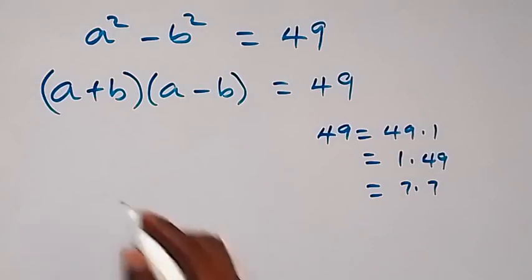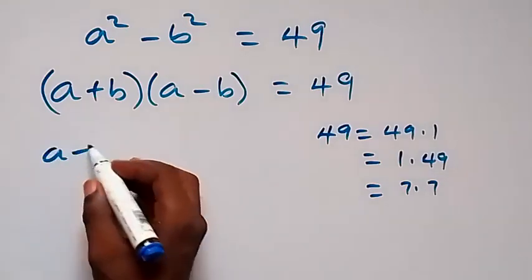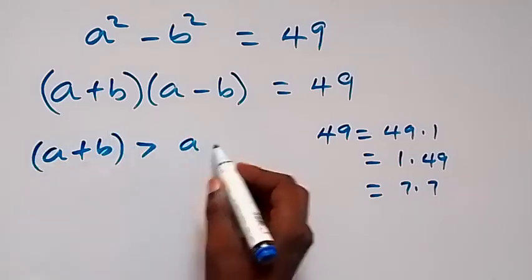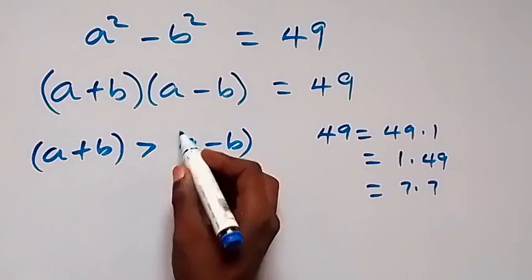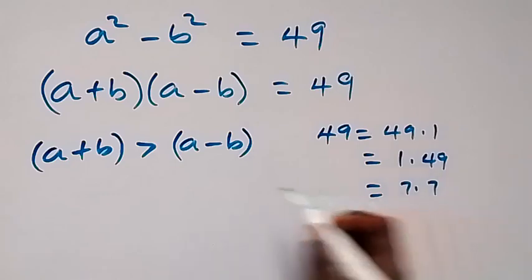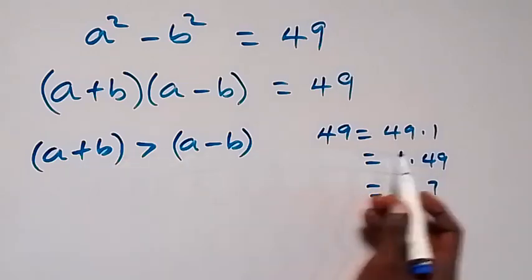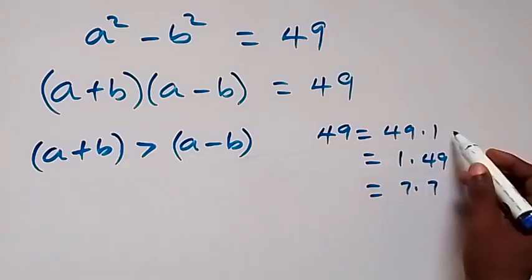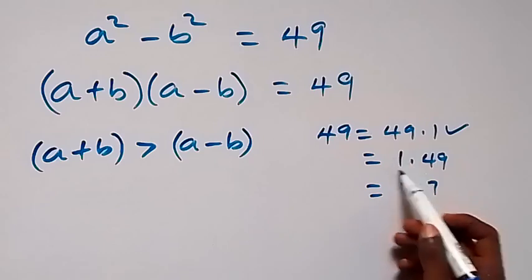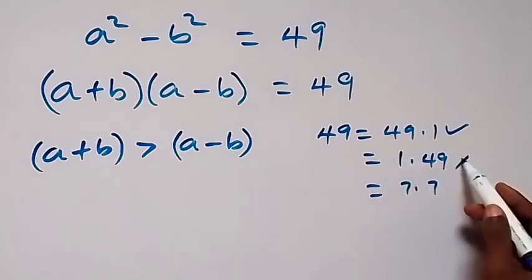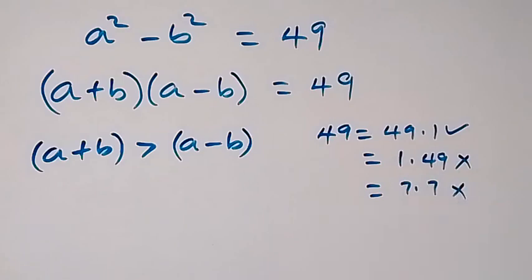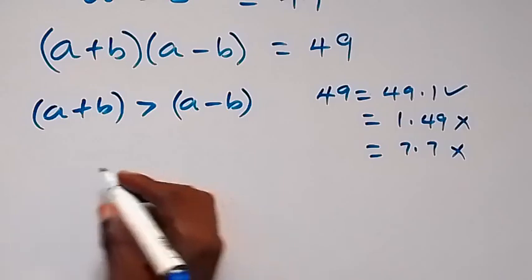Since a is greater than b, it follows that (a + b) is greater than (a minus b). So we need the larger factor assigned to (a + b) and the smaller to (a minus b). The pair 7 × 7 gives equal factors, and 1 × 49 has the smaller value first — neither of those work. So we use 49 × 1.